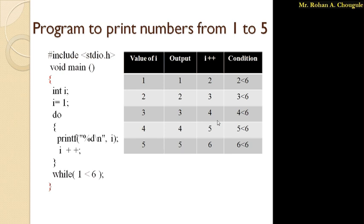Let's see the same example using do-while loop to print numbers from 1 to 5. I've written the header files, the void main function, declared one variable i of type integer, and initialized i to 1. Next is the do-while loop. As I said, control directly enters the do-while loop and executes the printf statement. Value of i is initially 1, so it prints 1. Then the increment statement i++ executes, so i becomes 2.